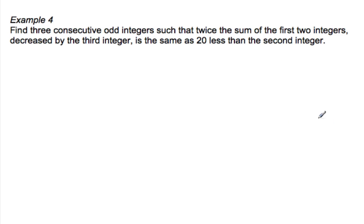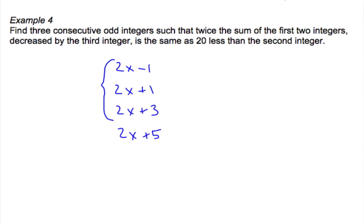We have three consecutive odd integers. Twice the sum of the first two integers decreased by the third integer is the same as 20 less than the second integer. So consecutive odd integers: 2X minus 1 is an odd integer. The next integer that's odd is plus 1, so 2X plus 1. The next one would be plus 3. Experience tells me that using these ones is usually easier because I have smaller numbers. Let's say these are our integers.